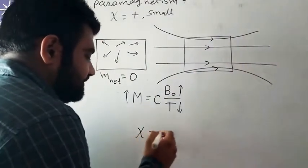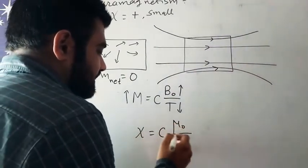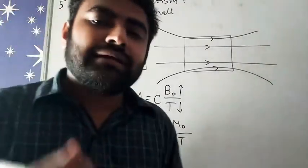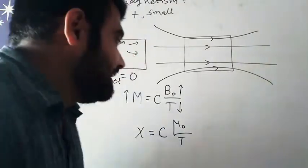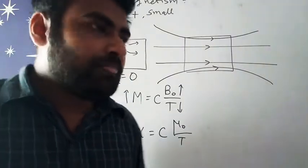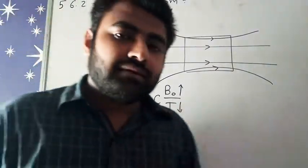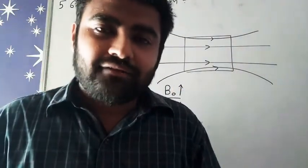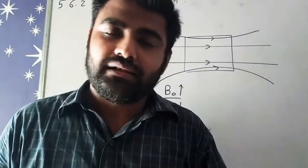Chi is equal to C mu naught upon T. So both these formulas are given by the Curie scientist. That's why this is called Curie's law. Curie had given the relation between magnetization, external magnetic field, and temperature.